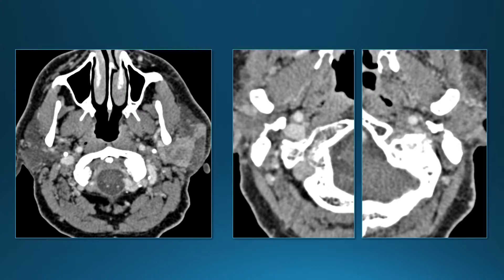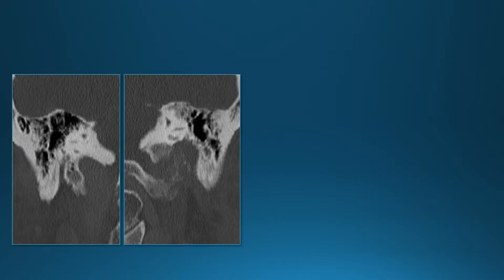When we see a lesion in the parotid space, we always need to evaluate the facial nerve. The best place to do that is just below the stylomastoid foramen. The normal stylomastoid foramen is bell-shaped and contains fat density. In a patient with a parotid mass, instead of fat density within that stylomastoid foramen we see soft tissue density. Following further along the mastoid segment of the facial nerve canal, the bone is eroded and markedly widened on the affected side.